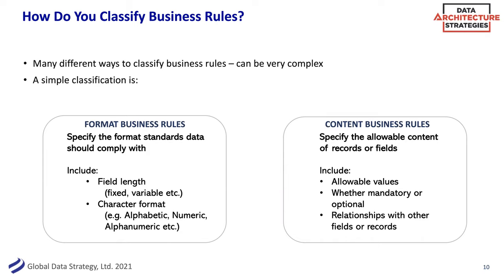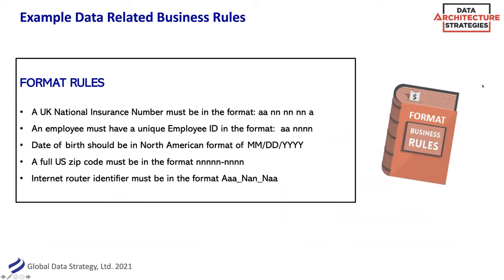The best way to bring this to life is to give some simple examples. Anybody that lives in the UK will know the National Insurance number is always in a specific format — two alphas, three double sets of numerics, and an alpha to finish. In the US or Canada, date of birth is usually in month-day-year format, as opposed to day-month-year as it is in Europe. Format business rules basically enable you to specify the shape that the data should look like, and when you look at actual data in those fields, you can compare it against this benchmark to say: does the data comply with those format rules?